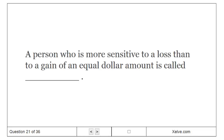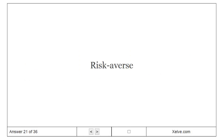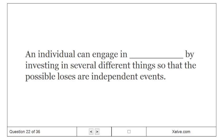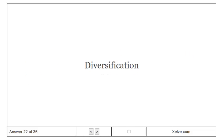A person who is more sensitive to a loss than to a gain of an equal dollar amount is called risk averse. An individual can engage in diversification by investing in several different things so that the possible losses are independent events.